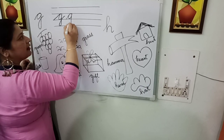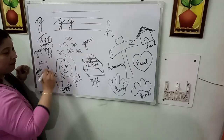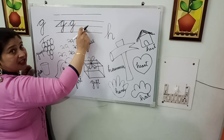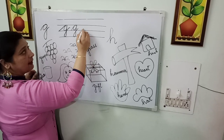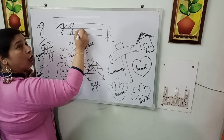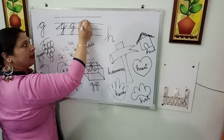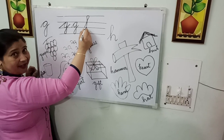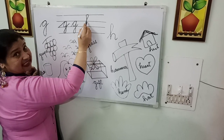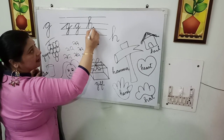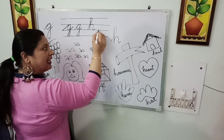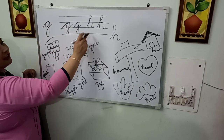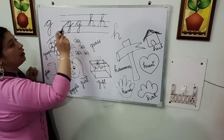This is 'G'. Now for writing 'h', we have to use the 1st topmost line, 2nd line, and 3rd line. We will start from the 3rd line, going up to the topmost line. Then we take a curve and come back to the same line where we started, stop here, then pick up from the 2nd line and write 'h' like this. Let's revise once again — let's write 'h'. These are the correct formations for writing 'g' and 'h'.